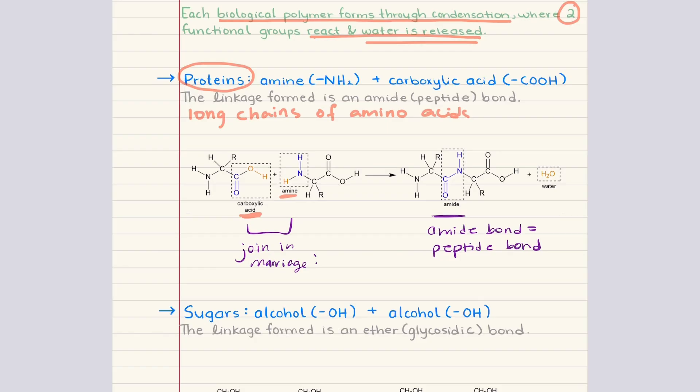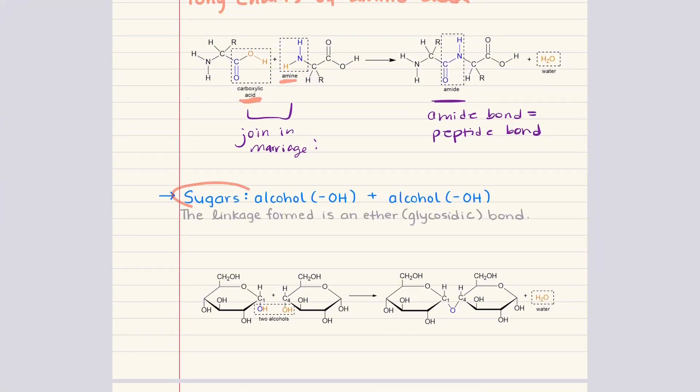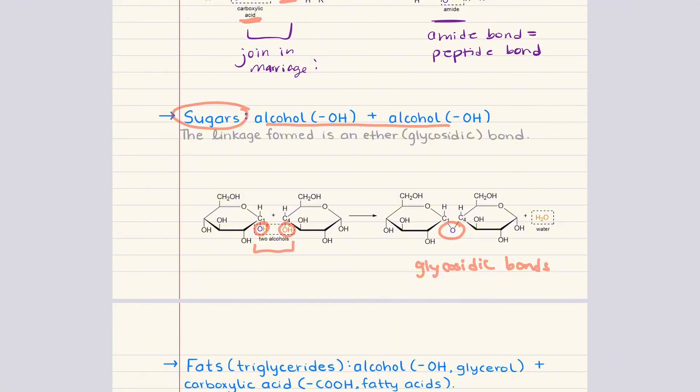Sugars provide our next example, and the chemistry here involves alcohol groups. A single sugar molecule contains many hydroxyl groups, many alcohol groups. And when two sugars react, one alcohol group attacks the carbon of another, creating an ether linkage. So this bond is called a glycosidic bond in biological systems. During its formation, a molecule of water is released, which again fits the pattern of a condensation reaction. And by forming these glycosidic bonds over and over, complex carbohydrates like starch and cellulose are created.